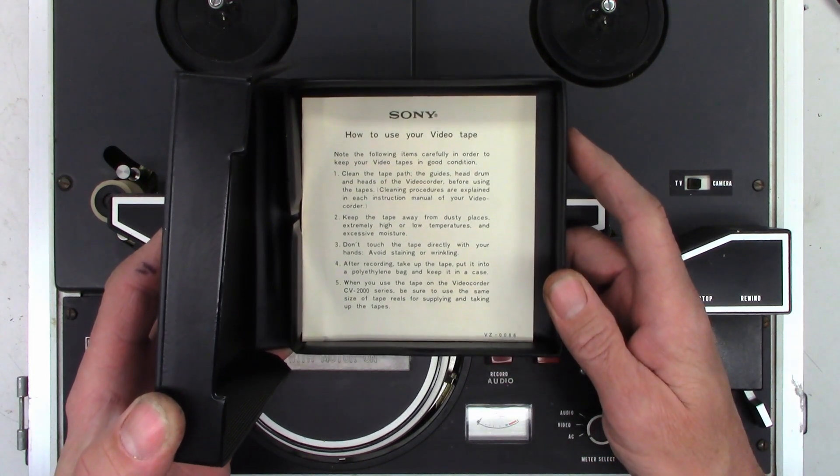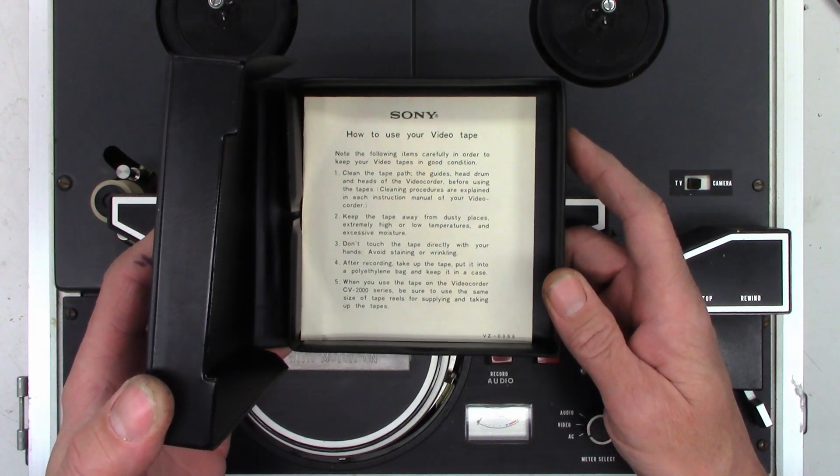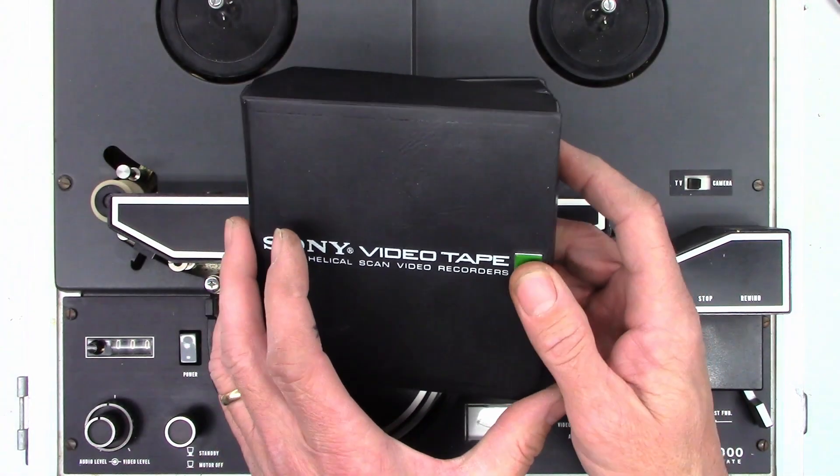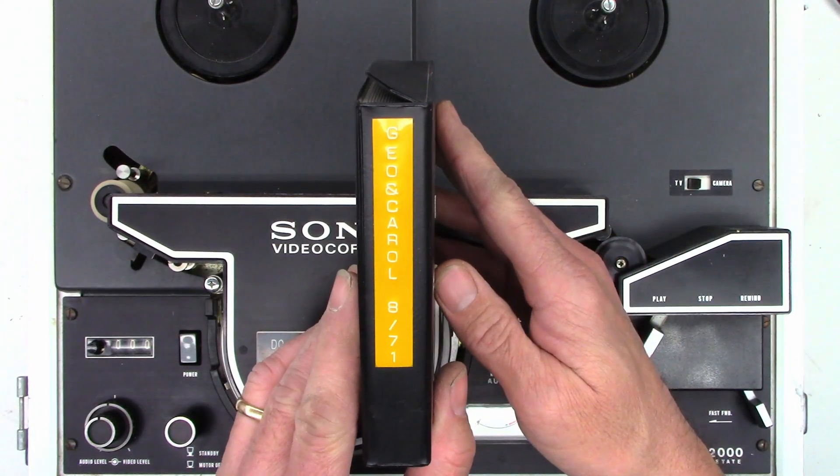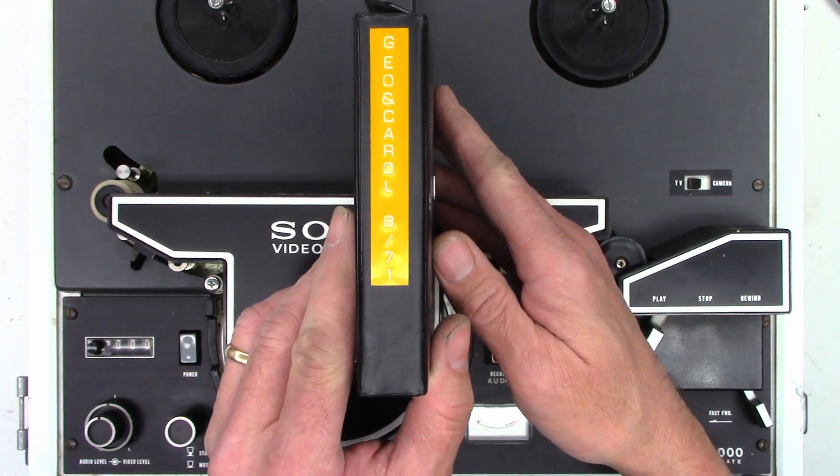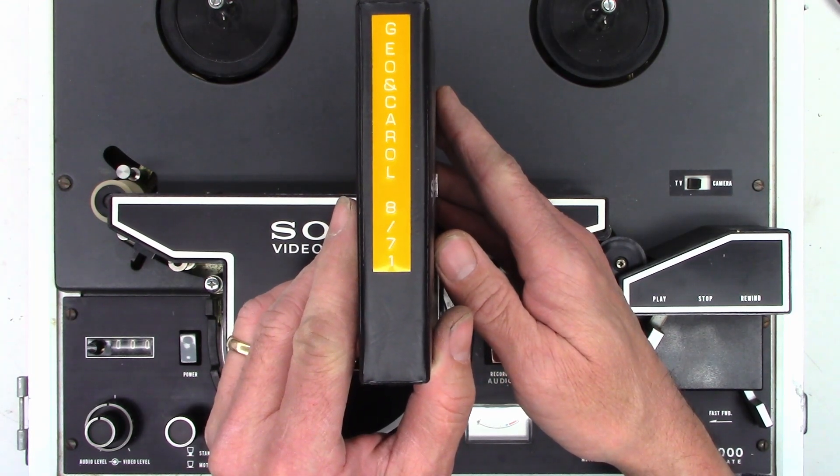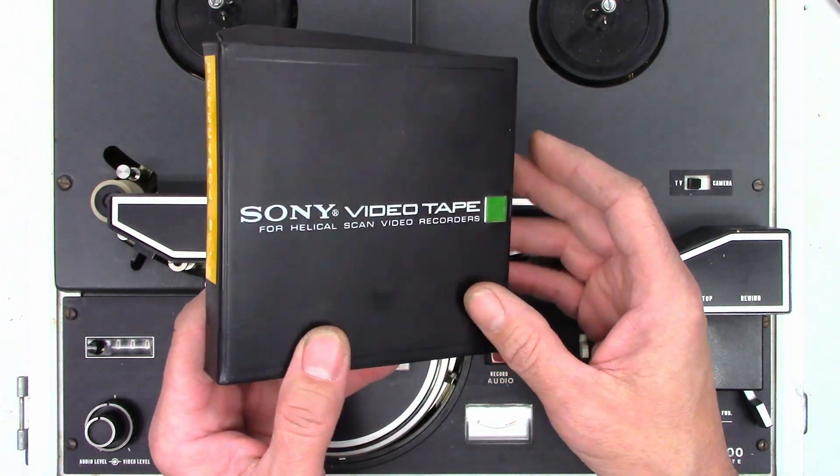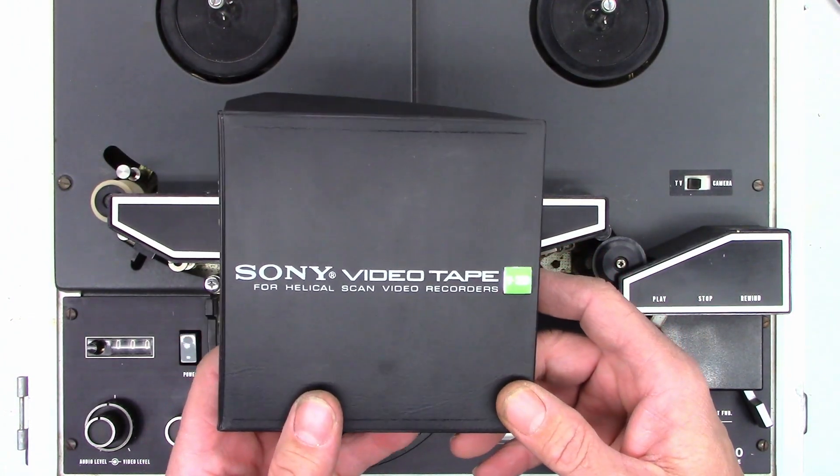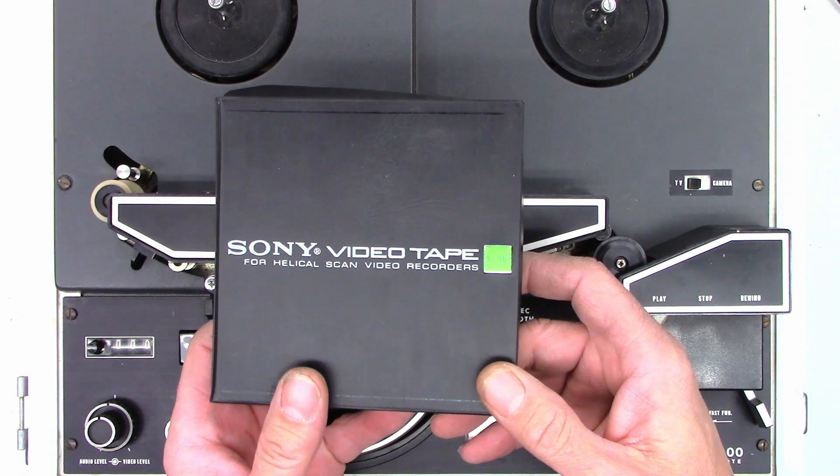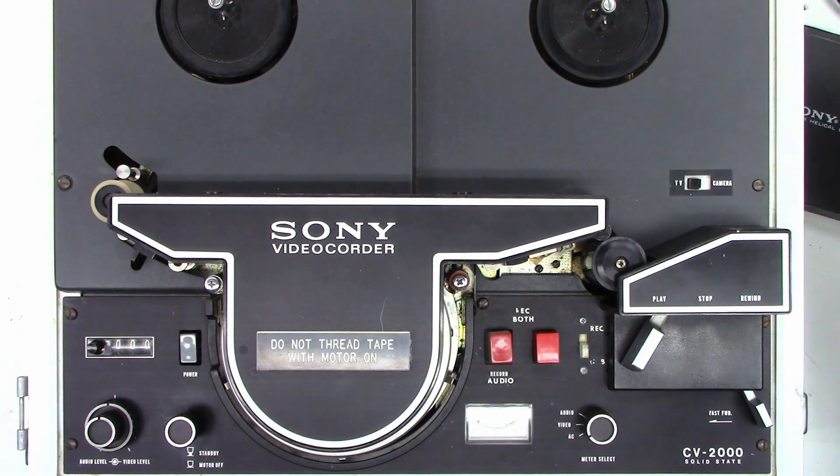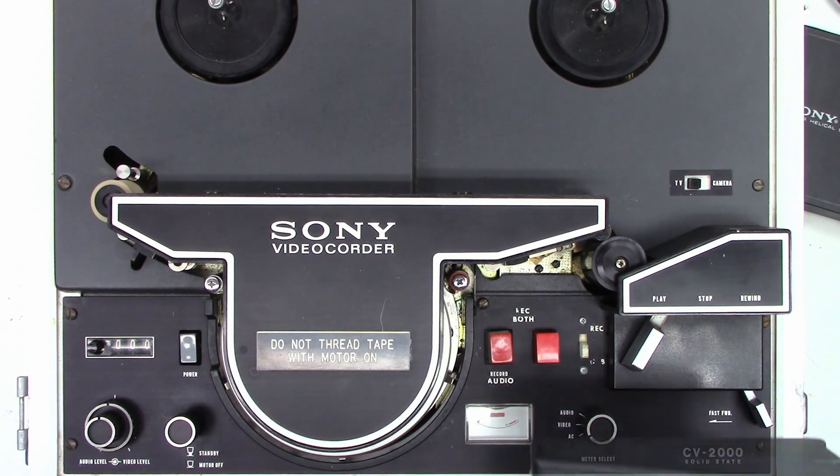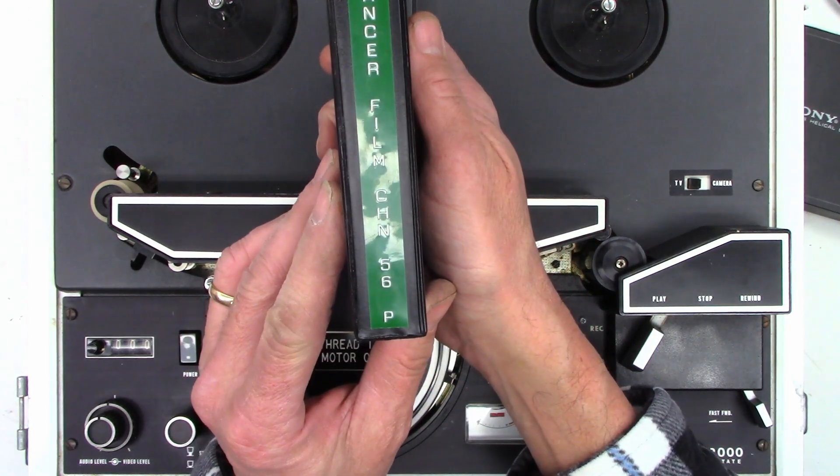Listed on the box it says George and Carol, August of '71, so I'm wondering what's actually on this tape. But before I go any farther with this unit, I need to contact the customer and see if he can supply me with a blank reel. The second tape in here says cancer film CHN 56P.